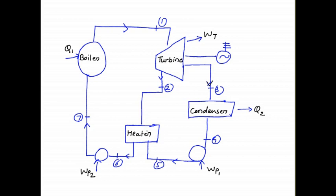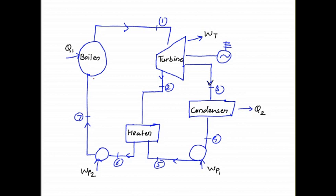After condensation, the condensed water transfers to the pump, and from this pump it is pumped to the heater. After the pump, the condensed water mixes with the M kg of steam extracted at pressure P2. So M kg of steam will heat the condensed water. When the water mixes with M amount of steam, the water will get heat from this M amount of steam. In the heater, the condensed water is mixed with the M amount of steam.